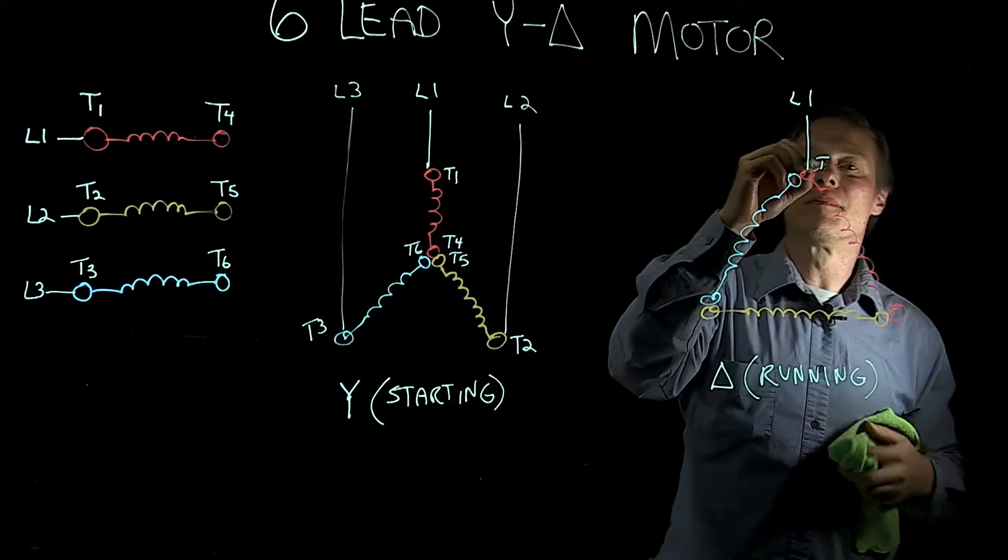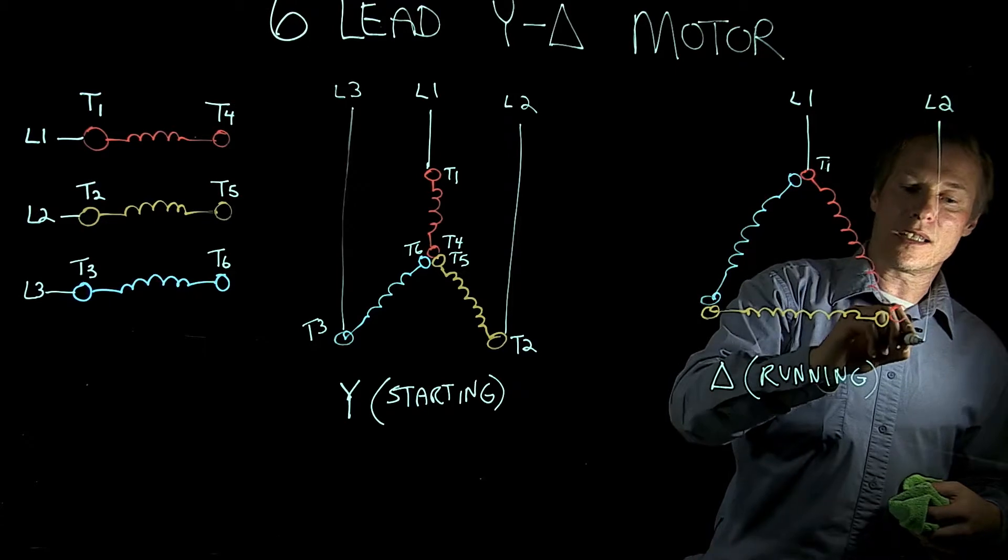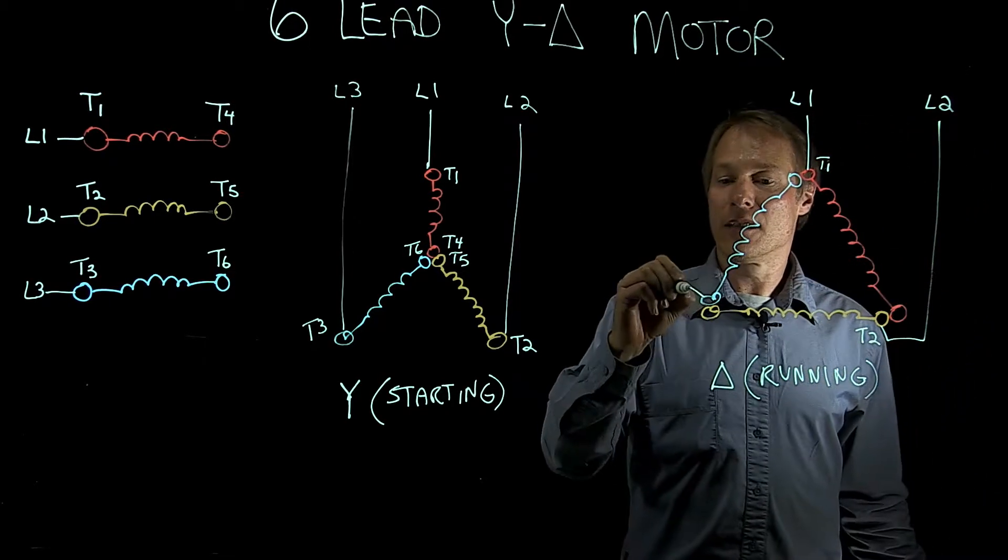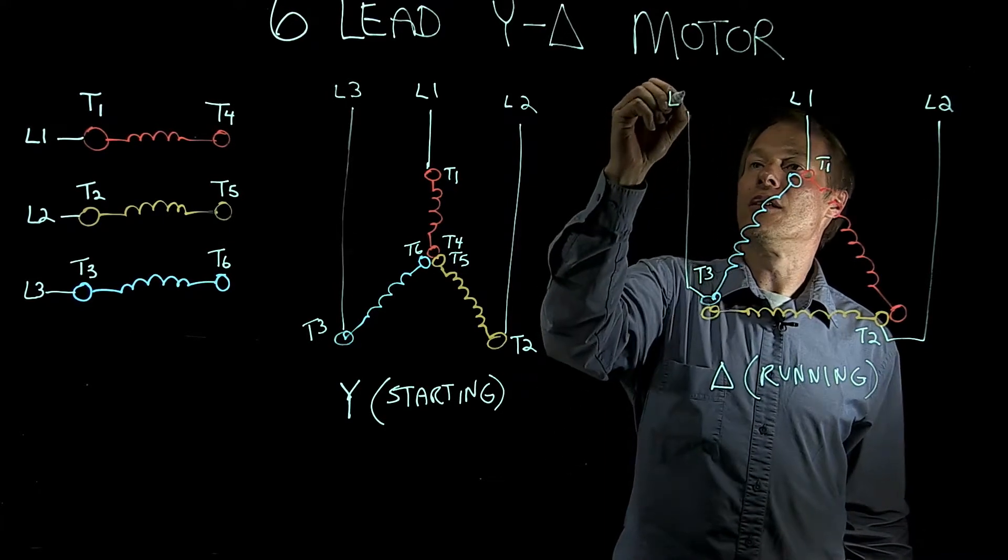And line 2 here is going to connect to T2, so this is T2. And this is T3, which connects to line 3.